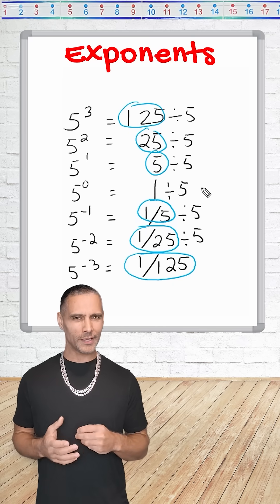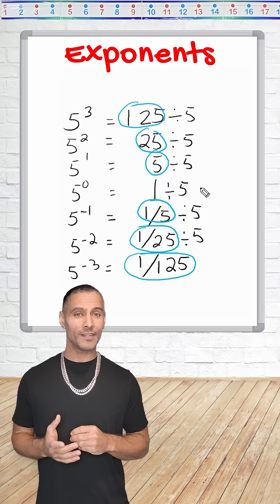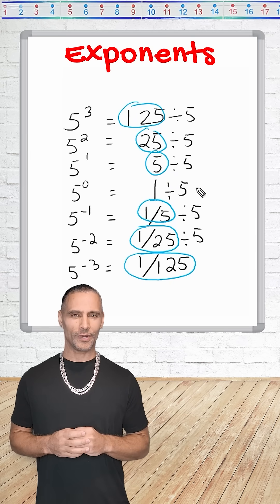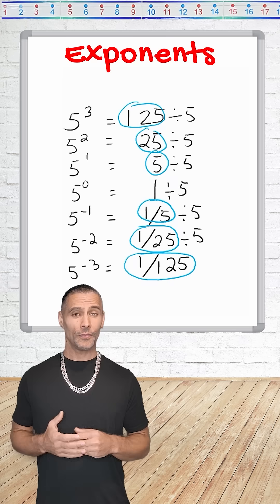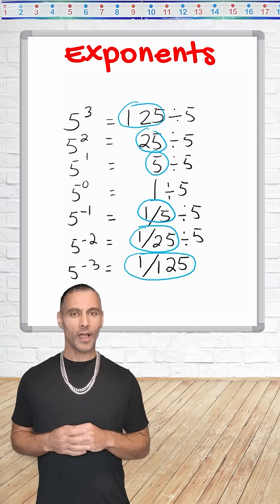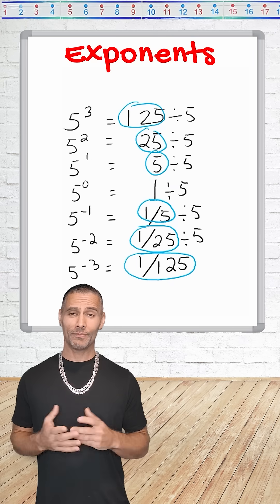Negative exponents don't make numbers negative. They just mean repeated division. They're the inverse of positive exponents. So whenever you see a negative exponent, just think, flip it.